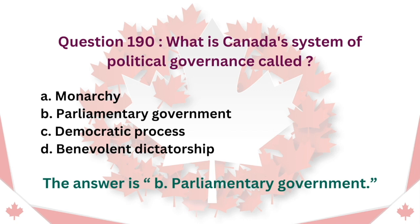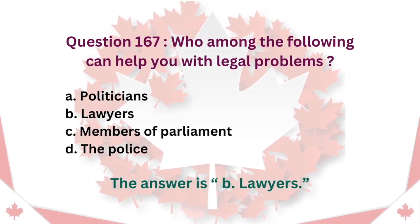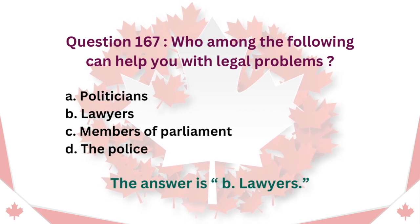Question 190: What is Canada's system of political governance called? A. Monarchy. B. Parliamentary government. C. Democratic process. D. Benevolent dictatorship. The answer is B. Parliamentary government.